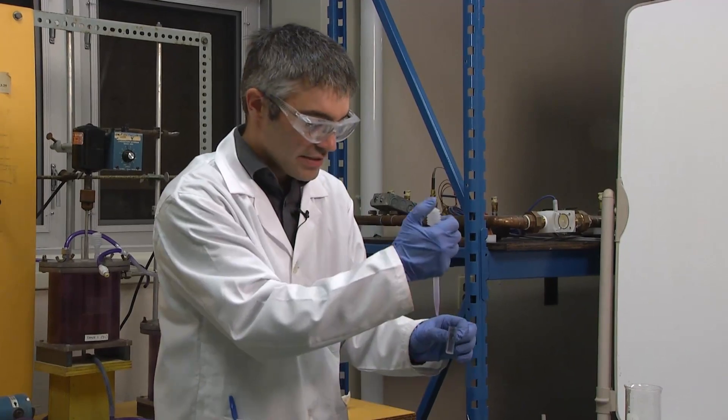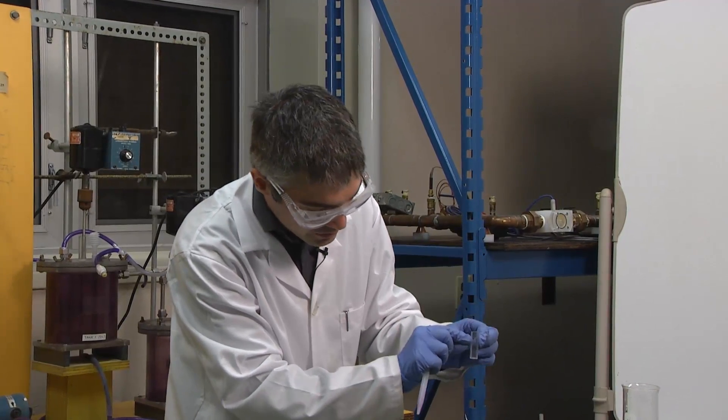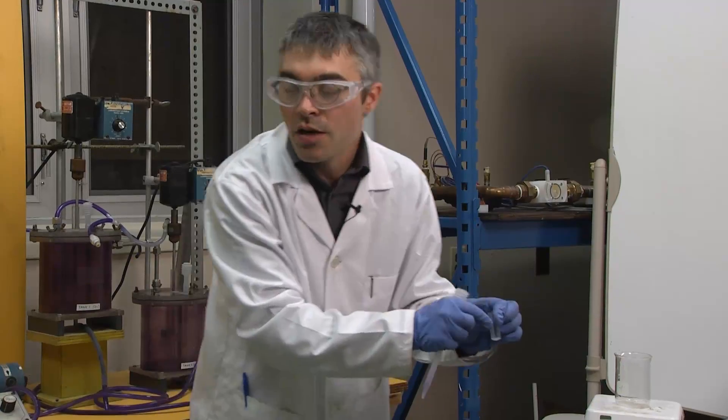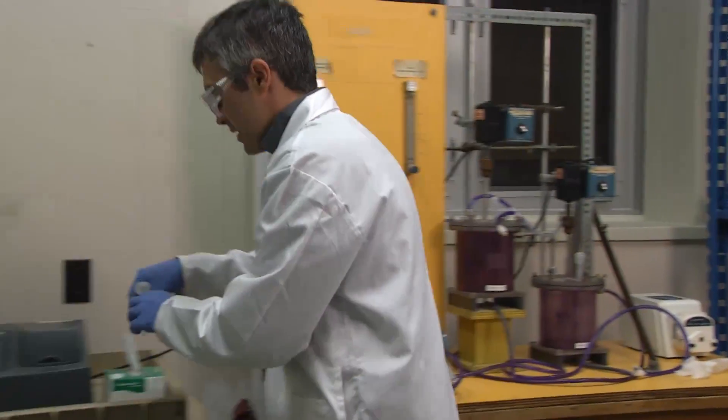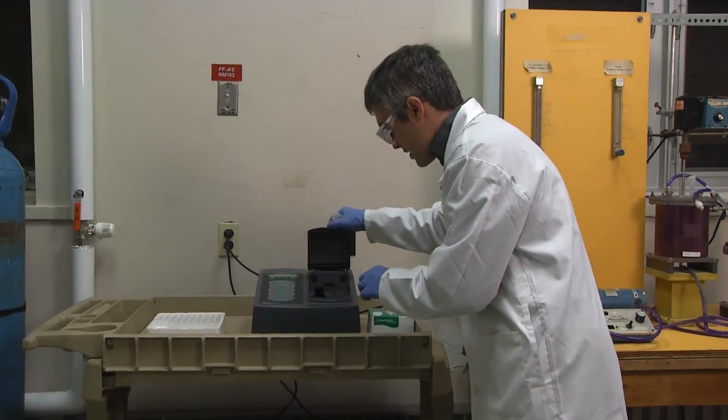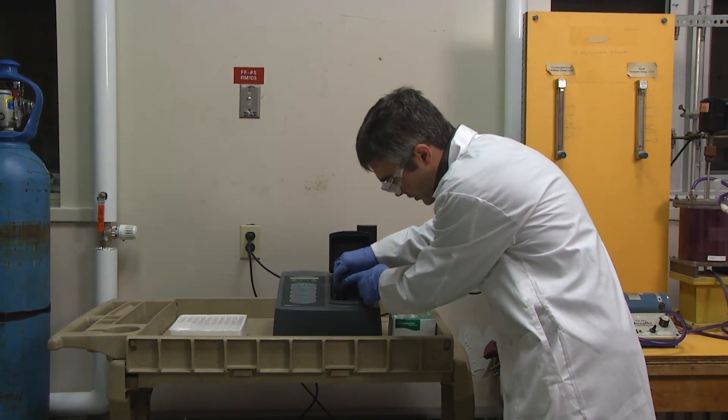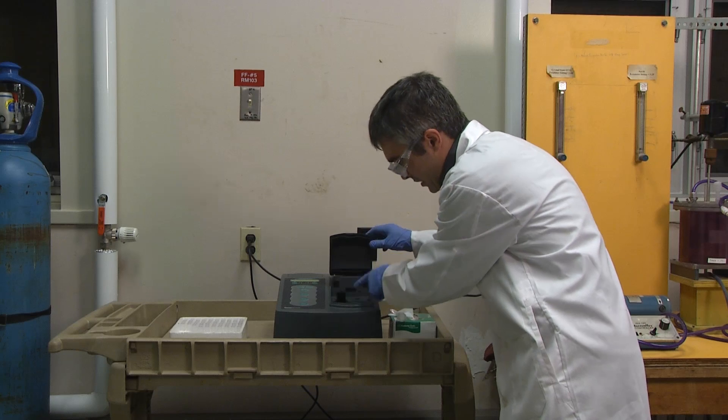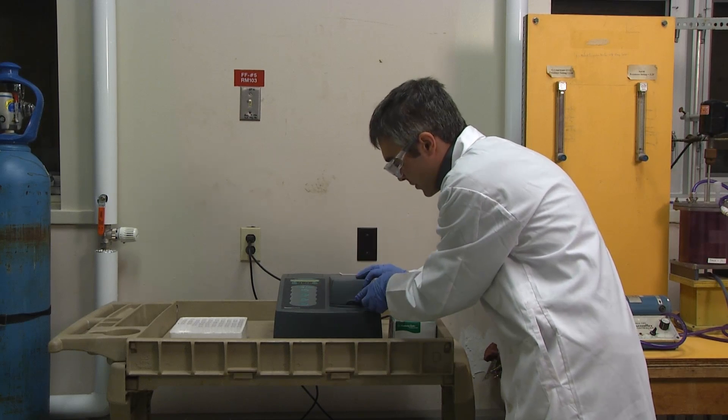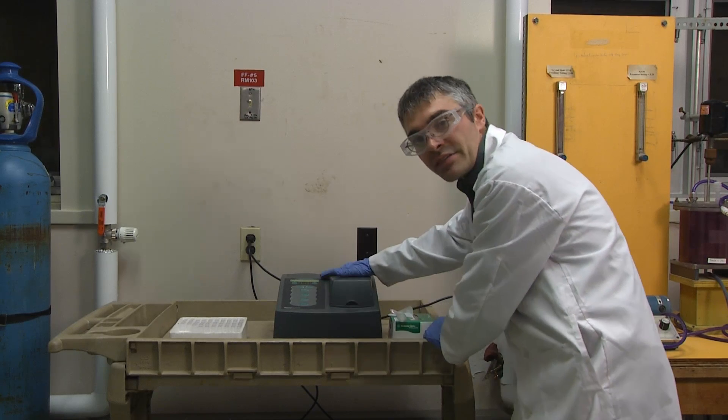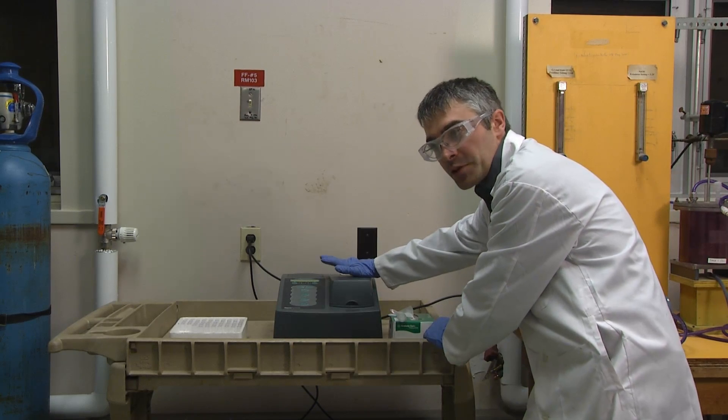Once you have the sample filled to the line, we'll be placing it into the spectrometer. Just down into the machine, it locks in with a little spring. You'll be closing the cap, and then you'll be able to take your absorbance reading. Before you take any readings, you must apply a blank.